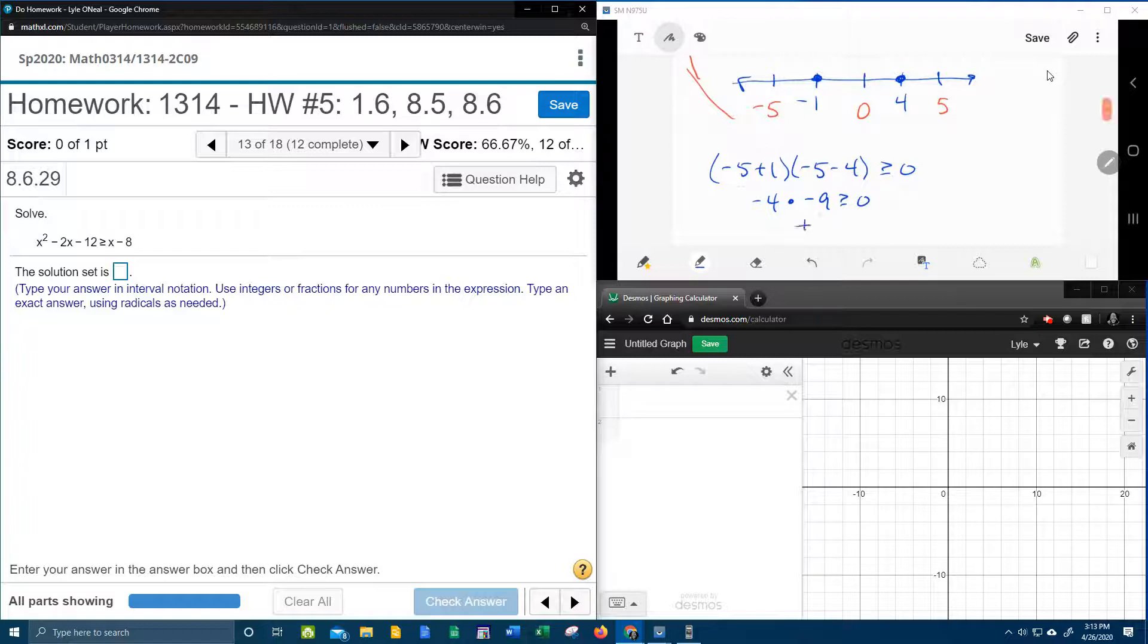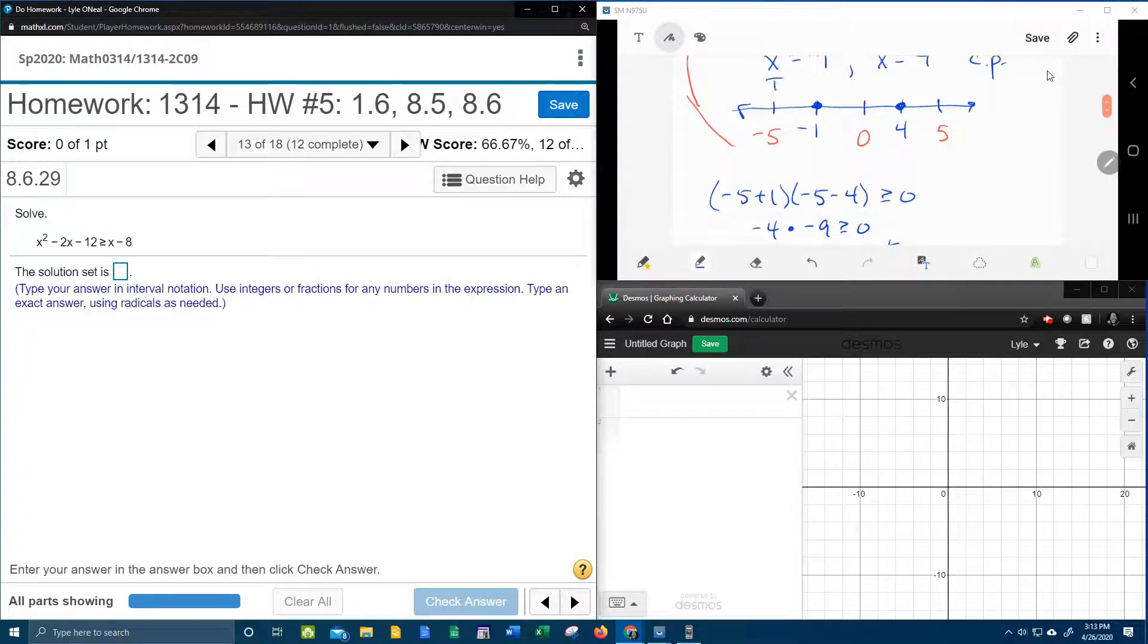Negative 5 minus 4 is negative 9. Negative times a negative makes a positive. I don't really care what it is. I know it's positive. And is a positive number greater than or equal to 0? That is true. And so that tells me that negative 5, that test point, produces a true statement, and then everything to the left of negative 1 is going to be a solution. Because if I plug it in, it's going to give me a true statement.